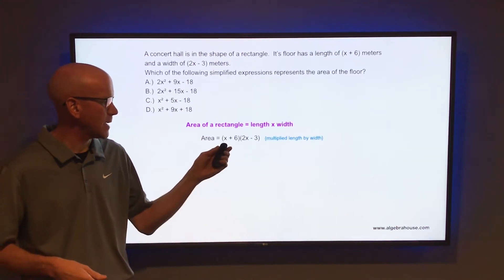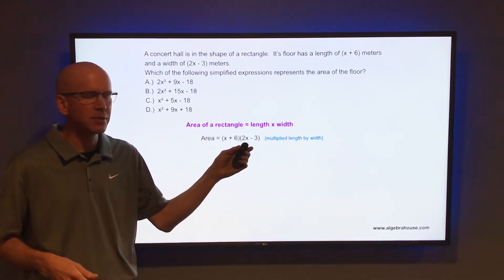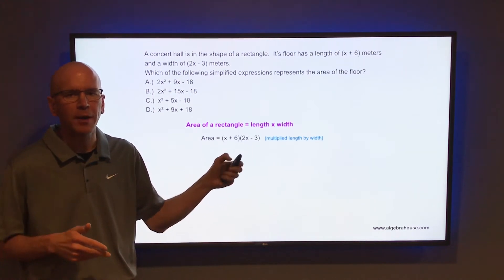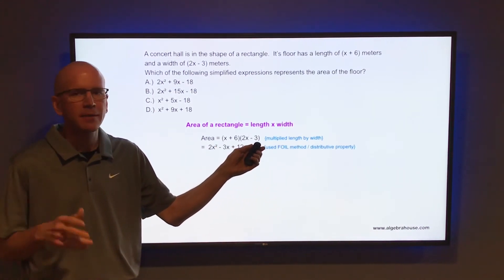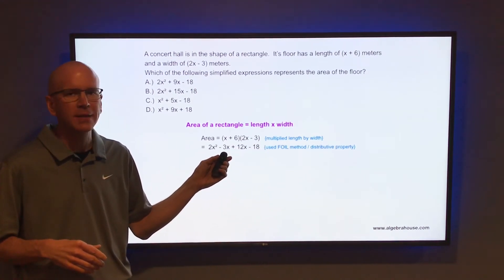So distribute that x through that second set of parentheses. Take x times 2x, those are the first terms of the FOIL method, that is 2x squared. And then take x times negative 3, the outer terms of the FOIL method, that is negative 3x.